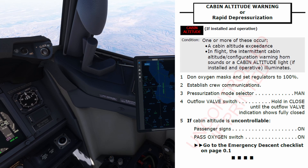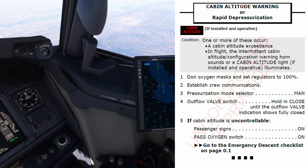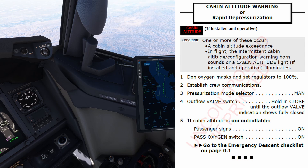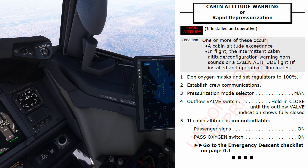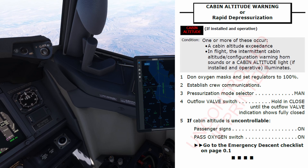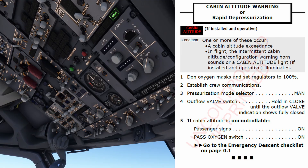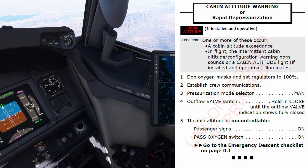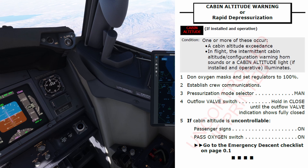Cabin altitude warning or rapid depressurization checklist. Condition: one or more of these occur. A cabin altitude exceedance. Yes, that is the case. I agree. Don oxygen masks and set regulators to 100%. Establish crew communications. Pressurization mode selector: Manual. Outflow valve switch: hold in close until the outflow valve indication shows fully closed. If cabin altitude is uncontrollable, yes, that is the case.